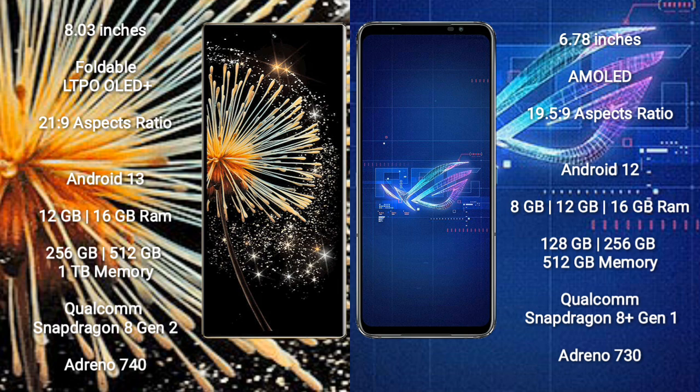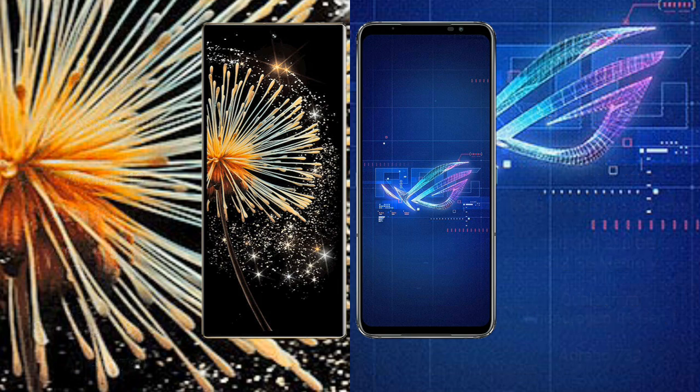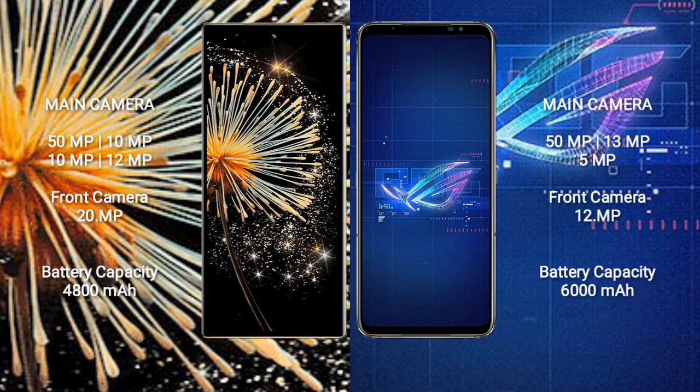Asus ROG Phone 6 runs on Android 12. It comes with 8GB, 12GB, or 16GB RAM, and 128GB, 256GB, or 512GB internal storage, powered by a Qualcomm Snapdragon 8 Gen 1 processor with Adreno 730 GPU.